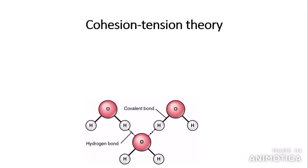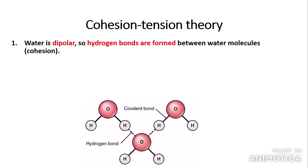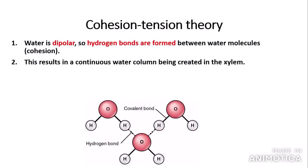So how is water actually pulled up against gravity? This is what we call the cohesion tension theory, and it links to the properties of water as seen in the biological molecules unit. Water is dipolar, meaning that the ends of the water molecule — the oxygen and the hydrogens — have slightly different charges due to a property called electronegativity. This means that hydrogen bonds are formed between water molecules, and this process of forming hydrogen bonds is called cohesion. The hydrogen bonding results in a continuous water column being created in the xylem.